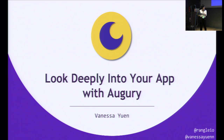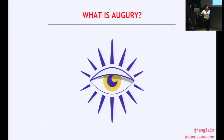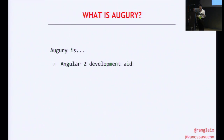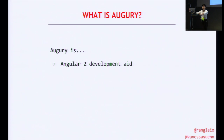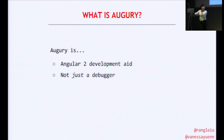Today I'm here to talk about Augury. First thing first, what the hell is Augury? Well, Augury, in short, is an Angular 2 development aid. It's a tool built with the aim to help developers understand and observe the dynamic behaviours of their Angular 2 applications better. Augury is really more than just a debugger — it does a lot more than that. I'll circle back in a bit to explain what I meant by that.